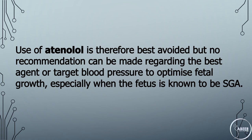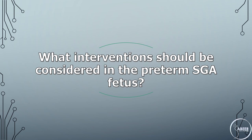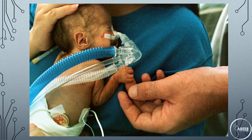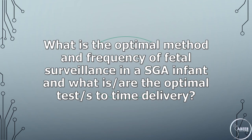What interventions should be considered in the preterm SGA fetus? Women with a SGA fetus between 24+0 and 35+6 weeks of gestation where delivery is being considered should receive a single course of antenatal corticosteroids to accelerate fetal lung maturation and reduce neonatal death and morbidity. A proportion of growth-restricted fetuses will be delivered prematurely, increasing risk of cerebral palsy. Maternally administered magnesium sulfate has a neuroprotective effect and reduces the incidence of cerebral palsy amongst preterm infants; Australian guidelines recommend its administration when delivery is before 30 weeks of gestation.